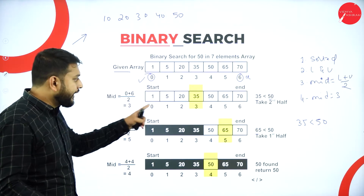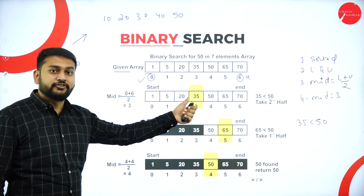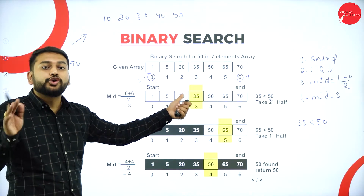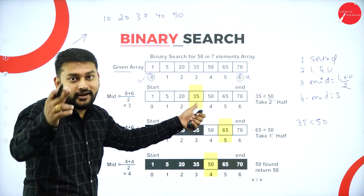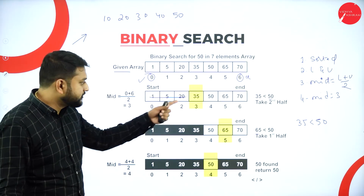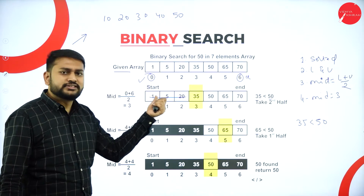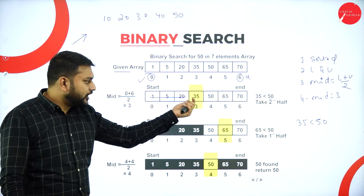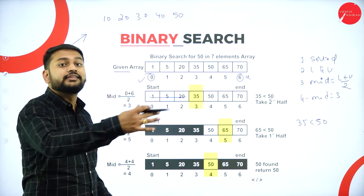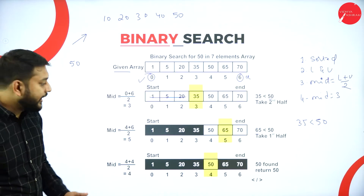Since I have a sorted array and 35 is less than 50, I know that the element I'm searching for is not in the left part of the array. The key value I'm searching is greater than the mid value, so I don't need to search the left side at all. My value must be in the right part of the array. So I will recalculate the mid value for the right portion.